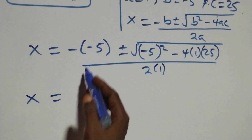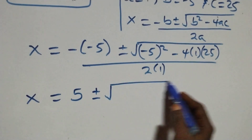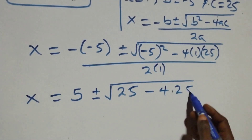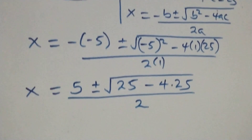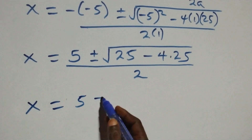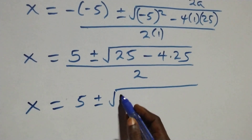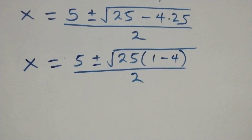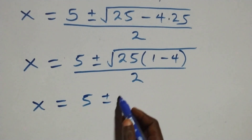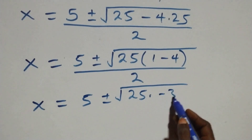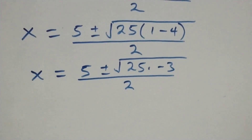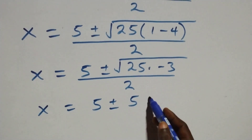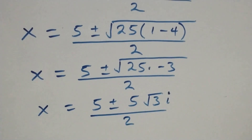This becomes x equals to 5 plus or minus square root of minus 5 squared, that's 25, then minus 4 times 1 times 25, which we can write as 4 times 25, over 2. This implies x equals to 5 plus or minus square root of 25 times 1 minus 4, that's minus 3, all over 2. Breaking into two roots: root of 25 is 5, so we have x equals to 5 plus or minus 5 root 3 i, over 2.